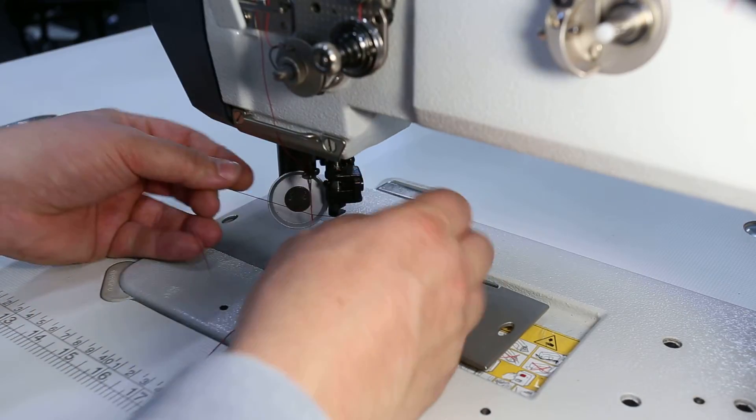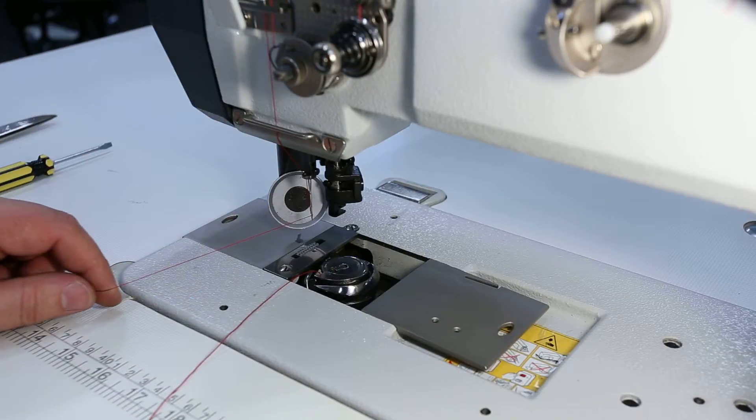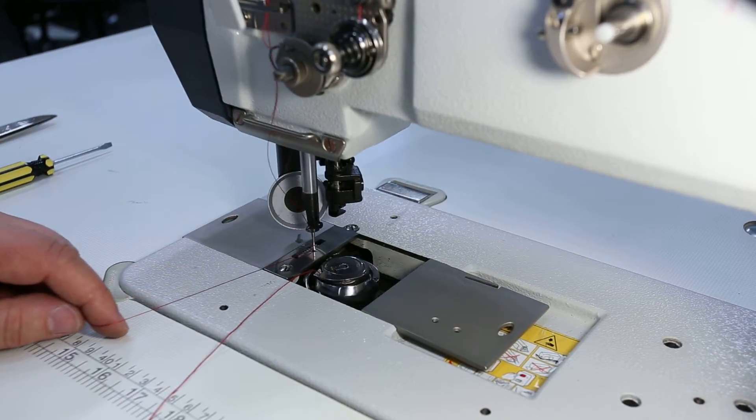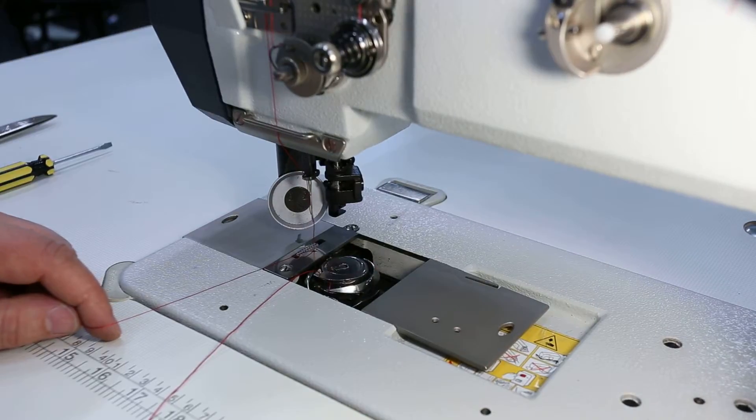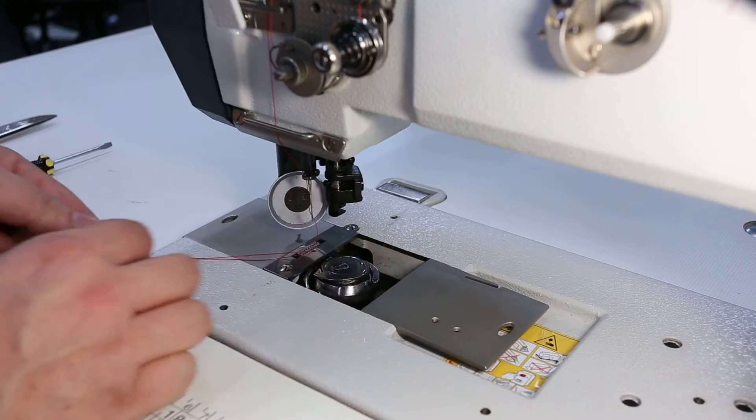Holding the top thread, turn the balance wheel towards you to pick up the bottom thread, and pull that through.